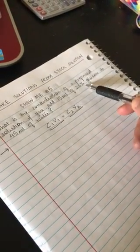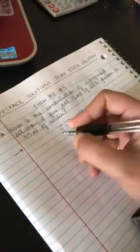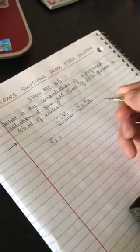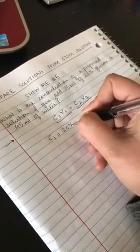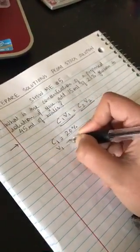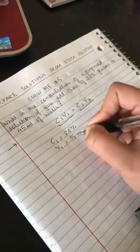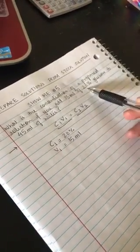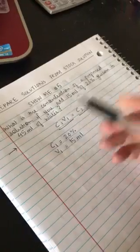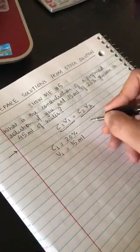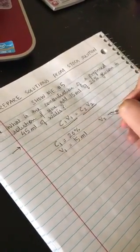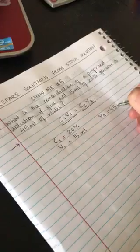Now according to the question, you are adding 15 ml of 20% glucose, which means your C1 is going to be 20%, your V1 is going to be 15 ml.